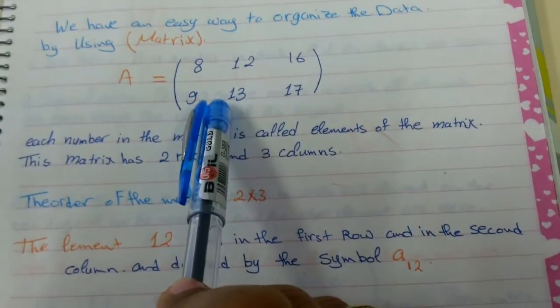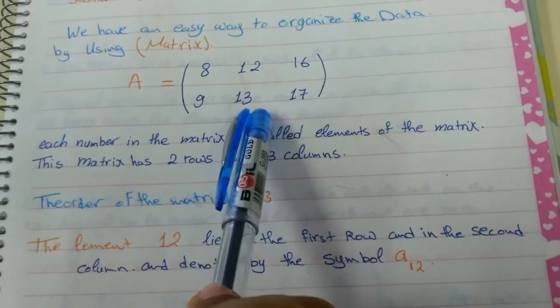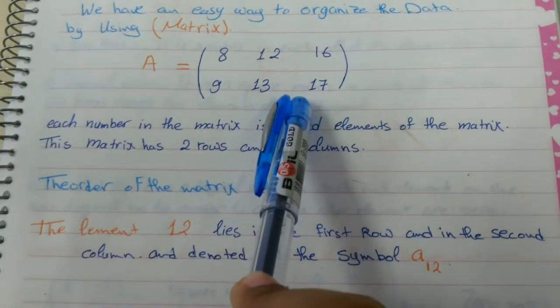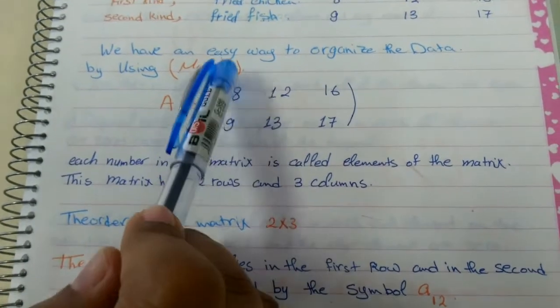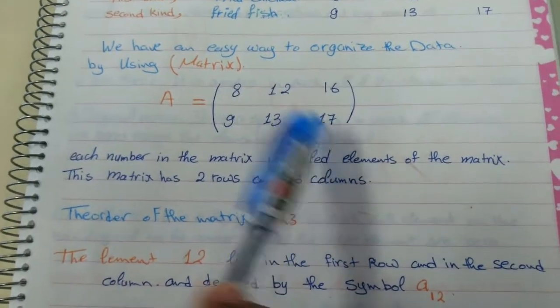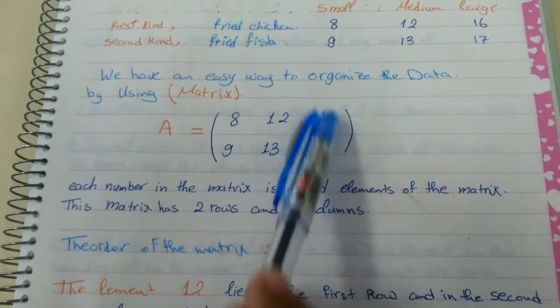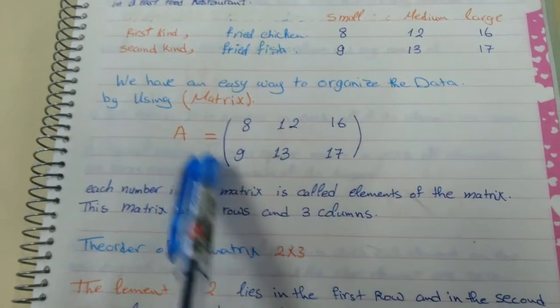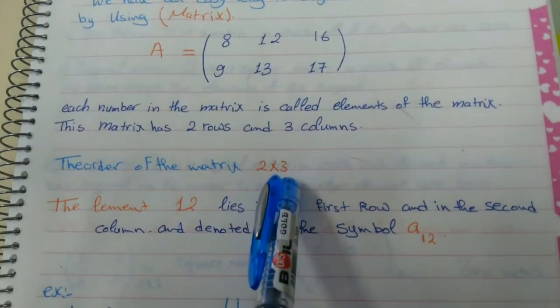Each number inside the matrix is called the elements of the matrix and also there is an order for each matrix. How we can know the order? First, you have rows and you have columns. How many rows do you have? Two. And how many columns? Three. So the order of this matrix or matrix A is 2 times 3.